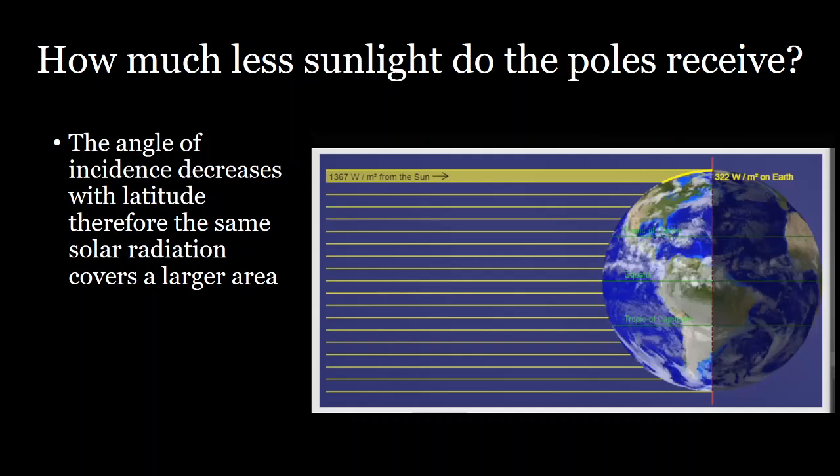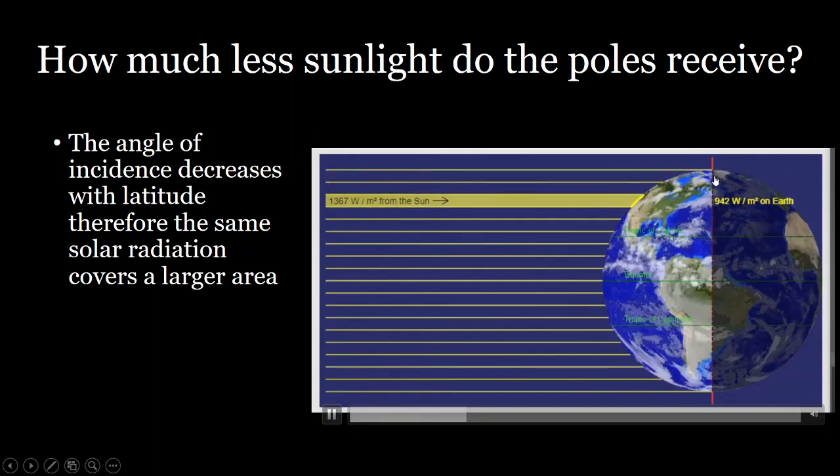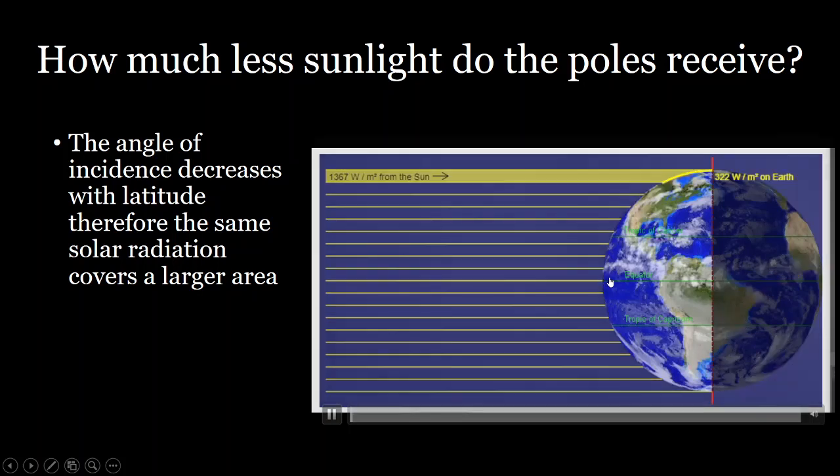So we know that the polar regions are significantly colder than the tropics near the equator. And so this is due to the fact that the angle of incidence or the angle at which the sunlight hits the surface of the earth is greater. And so there's a larger area that that same cross-section of sunlight has to heat up. And you can see that here as we play this animation, as that angle of incidence becomes more perpendicular, there's a smaller area that the sun is heating up and that energy is more concentrated.